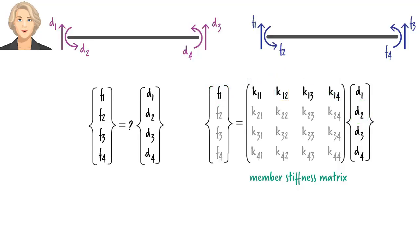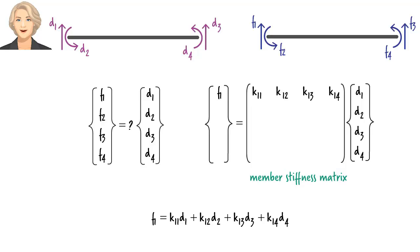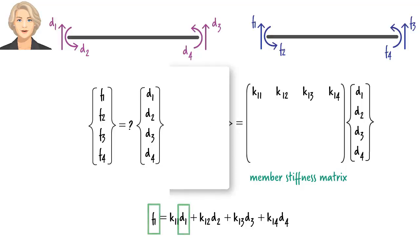Let me write the first equation in algebraic form. It defines F1, the shear force at the left end of the beam, in terms of the four displacements and four stiffness coefficients. What is K11? It is the stiffness coefficient for pair F1, D1. This means, if the beam is displaced in direction 1 by D1, then a force equal to K11 times D1 develops in direction 1.